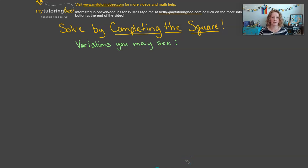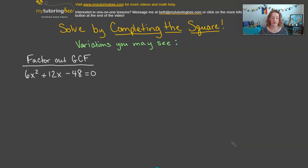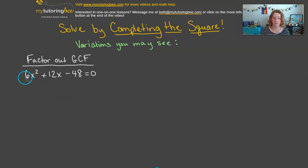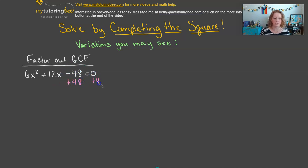Let's go over some variations you may see. So far all our problems had no coefficient before the x squared term. Sometimes you may need to factor out the greatest common factor because we want that leading coefficient to be 1. The first step still looks similar — get rid of the third term by adding 48 to both sides. We get 6x squared plus 12x equals 48.